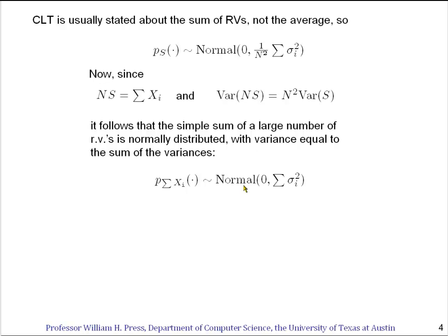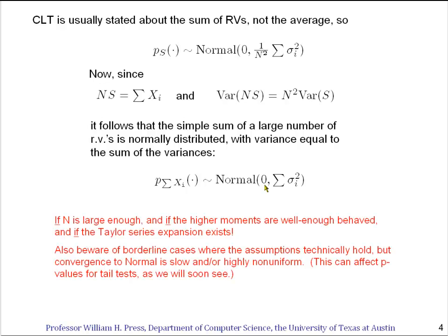That's the very simple statement of the theorem: if you sum the variables, you just sum their variances and the result is normal. Of course, I've subtracted off the means, so you would also sum the means of the individual variables to get the value that would go into the mean of the normal distribution.